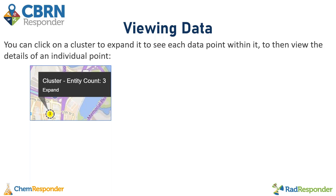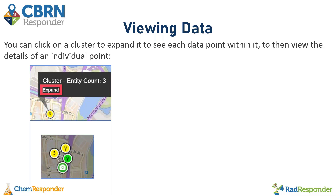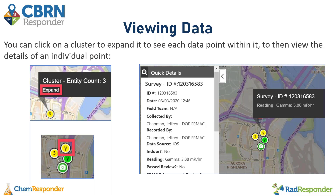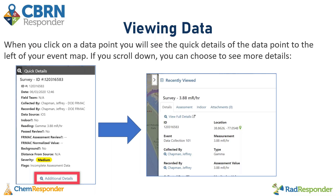A cluster is where data points group together when there are a lot of data points in very close proximity to one another. If I zoom in and zoom out, the data points will cluster and uncluster. You can click on a cluster to expand it and see the details of the individual data points — in this cluster of three, I have two gamma surveys and one photo observation. If I click the gamma survey that's yellow, it will give me the survey ID and a quick box that appears right above it, as well as the reading, and to the left-hand side I'll see quick details including who collected it, when they collected it, any flags, severity, and the reading itself. If I want more information, I'll click the Additional Details button to see more details on the right-hand side of my event map, including general details and different tabs for assessment, indoor, and attachment. I can click View Full Details to be brought to the details page we saw previously from the data tables.